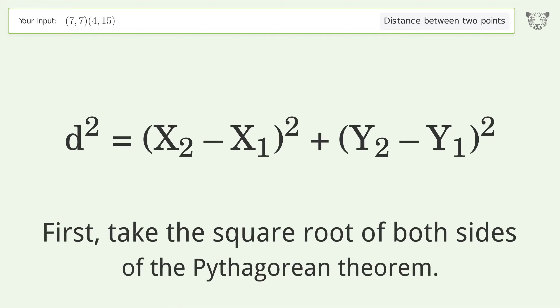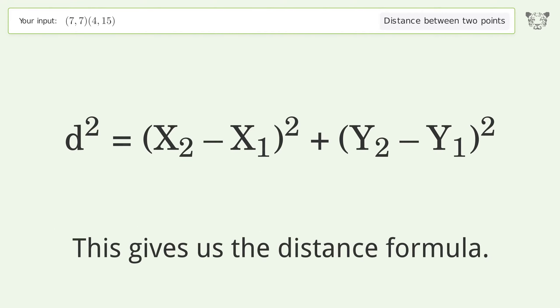First, take the square root of both sides of the Pythagorean theorem. This gives us the distance formula.